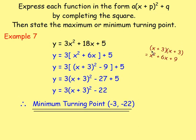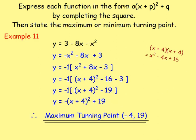More examples followed where the coefficient of x squared was three. Take out three as a common factor, halve the coefficient of x, apply the correction number, and leave the constant as it is. When multiplying out the square brackets, you had -27 plus 5, which simplifies to -22. And then again, you get the turning point.